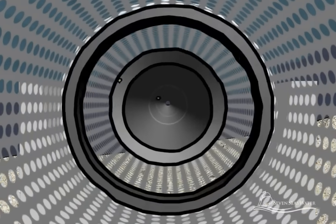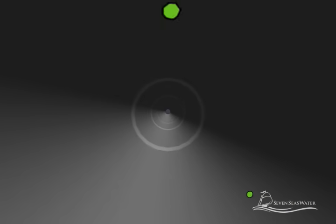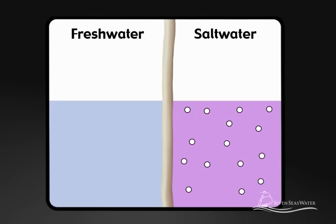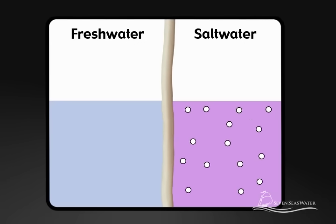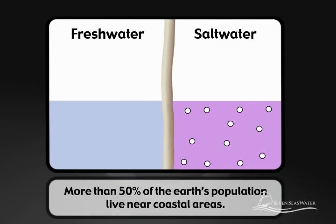Osmosis is a naturally occurring process where a solvent, such as water, passes through a semi-permeable barrier. The semi-permeable barrier, or membrane, allows some things to pass through it but not others.